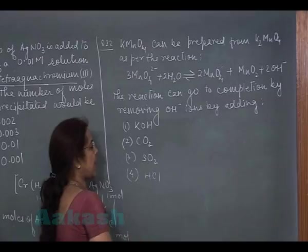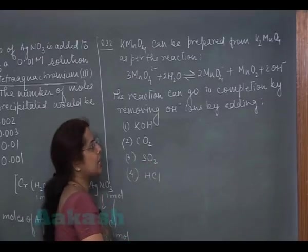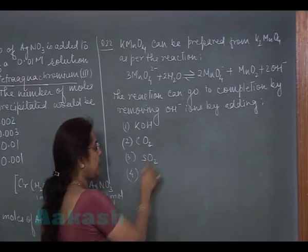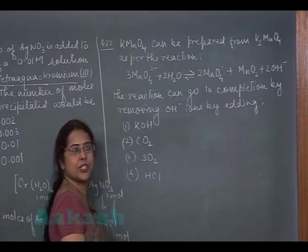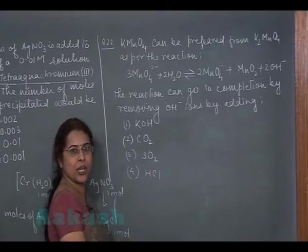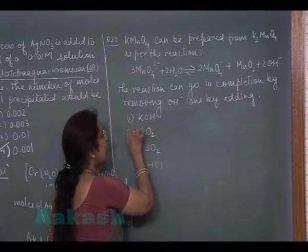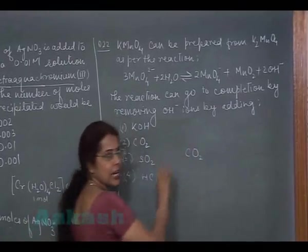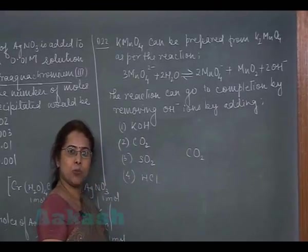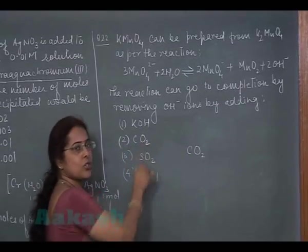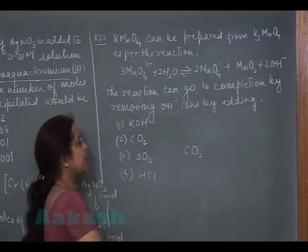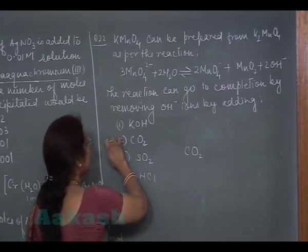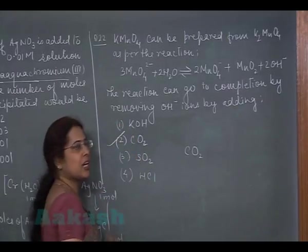But if in the reaction we use sulfur dioxide, then sulfur dioxide will be reduced by KMNO4. If we use HCl, HCl can be oxidized by KMNO4. But if we are using carbon dioxide to shift the equilibrium in the forward direction, there won't be any problem because carbon dioxide is already an oxidized form and being acidic it can neutralize the effect of OH ion.